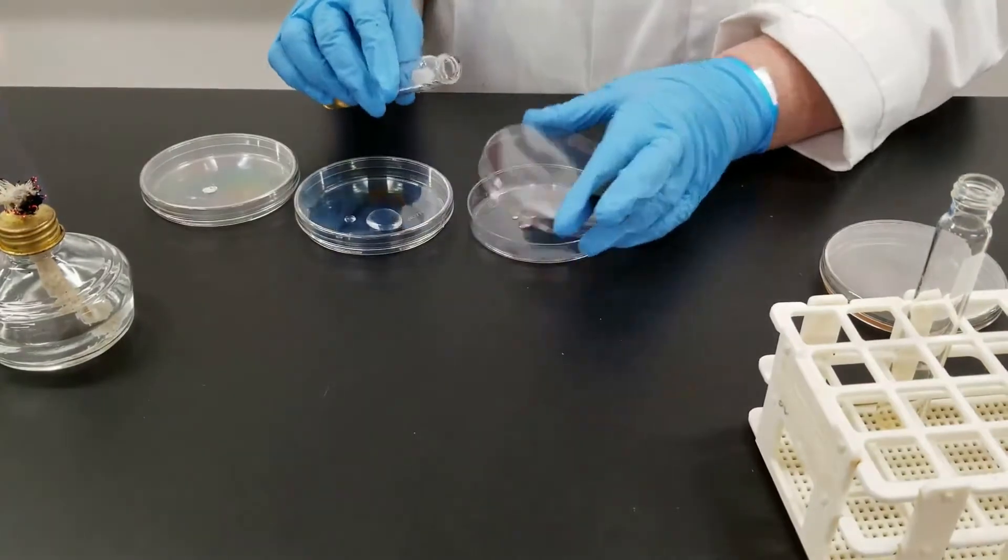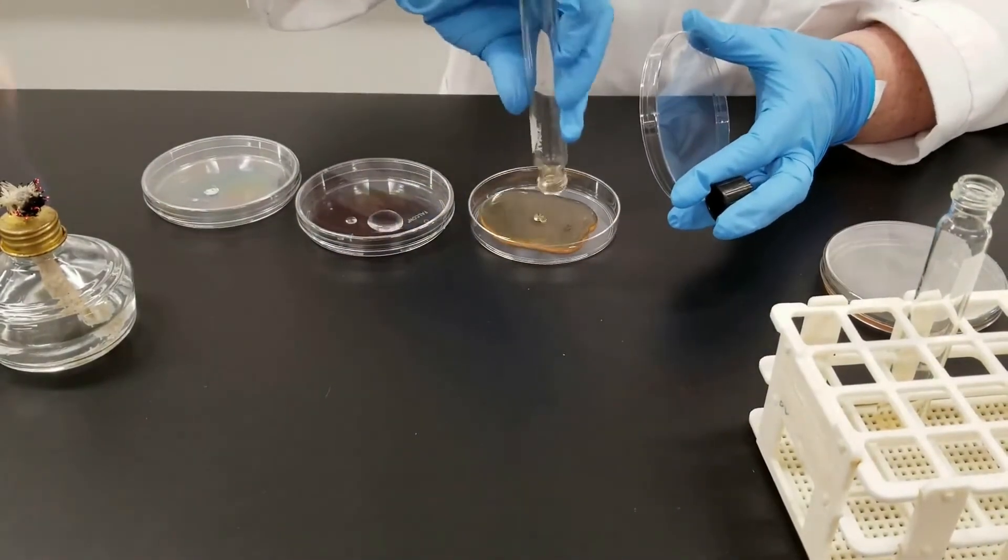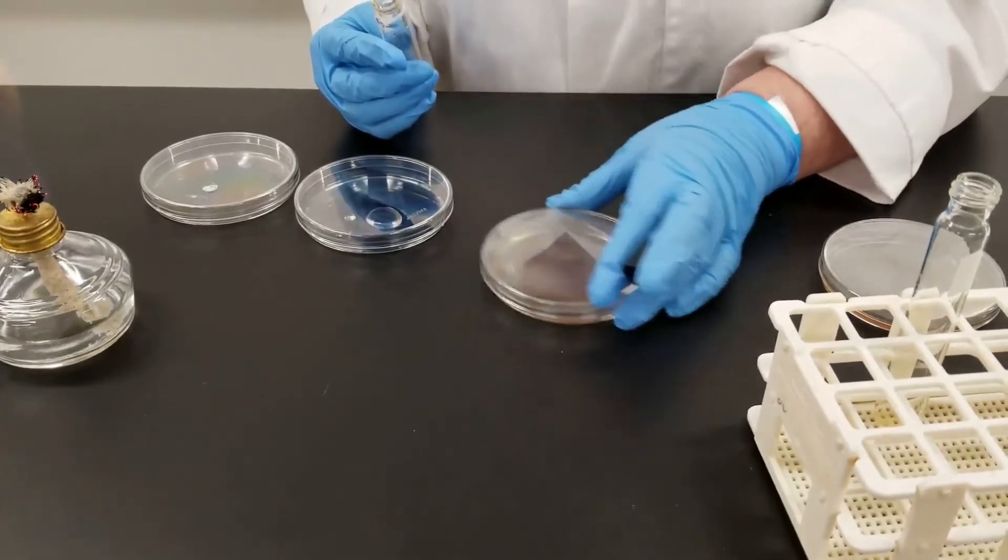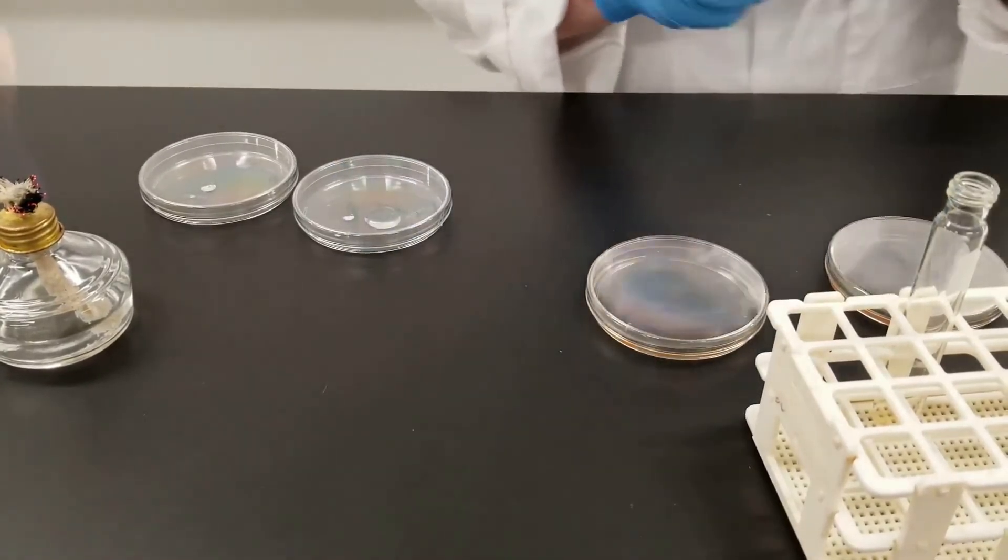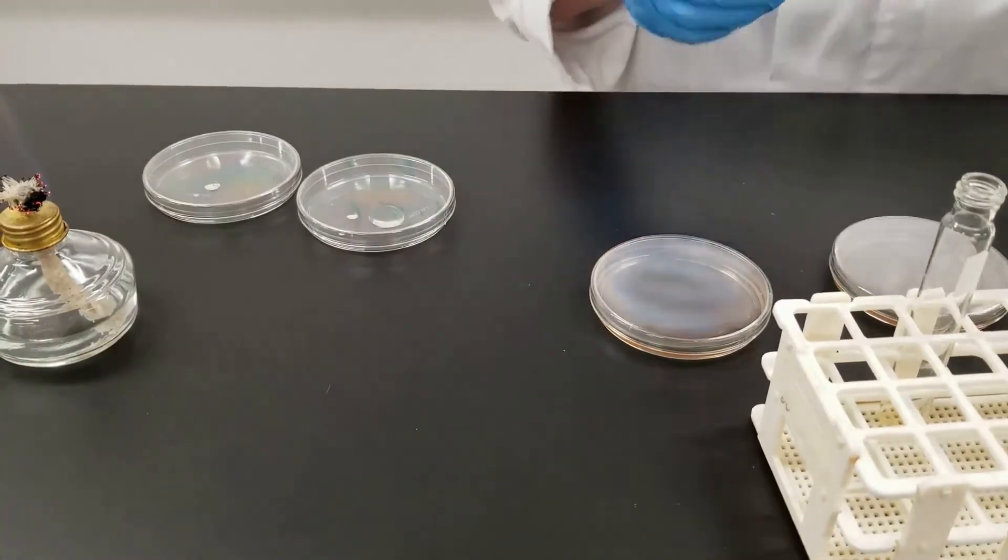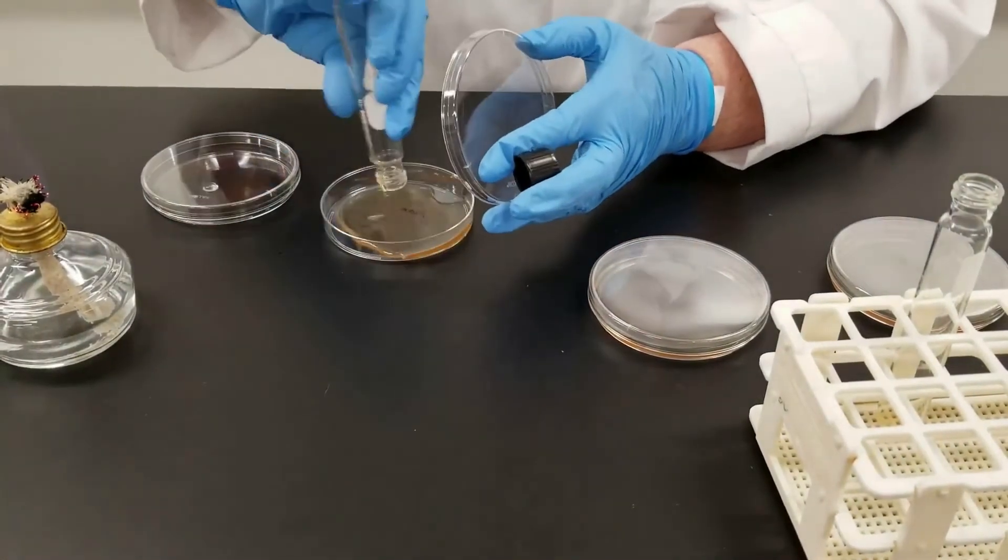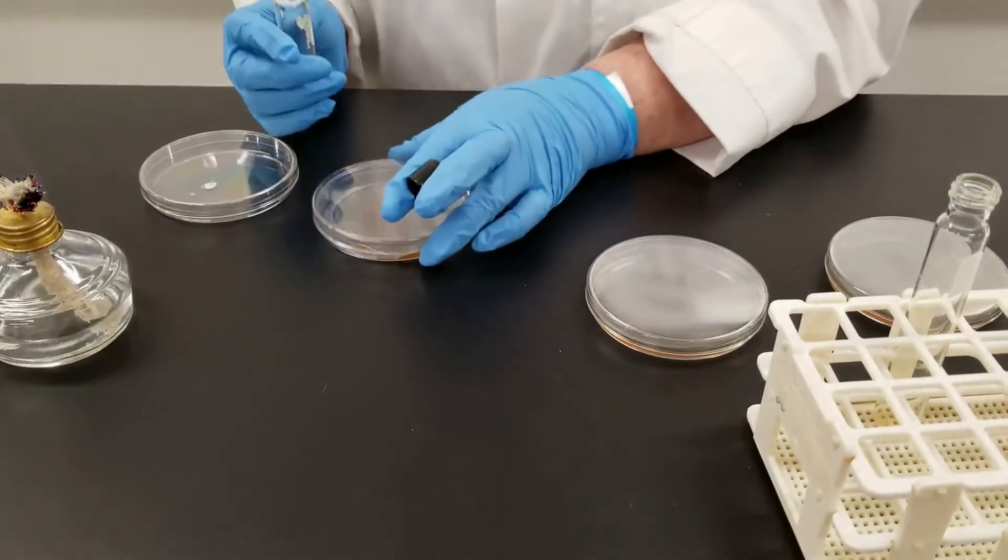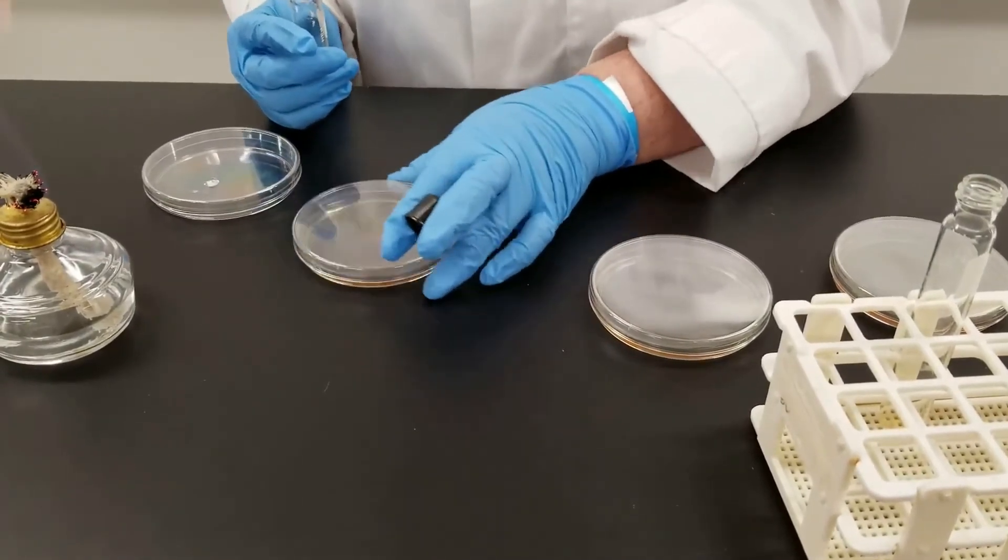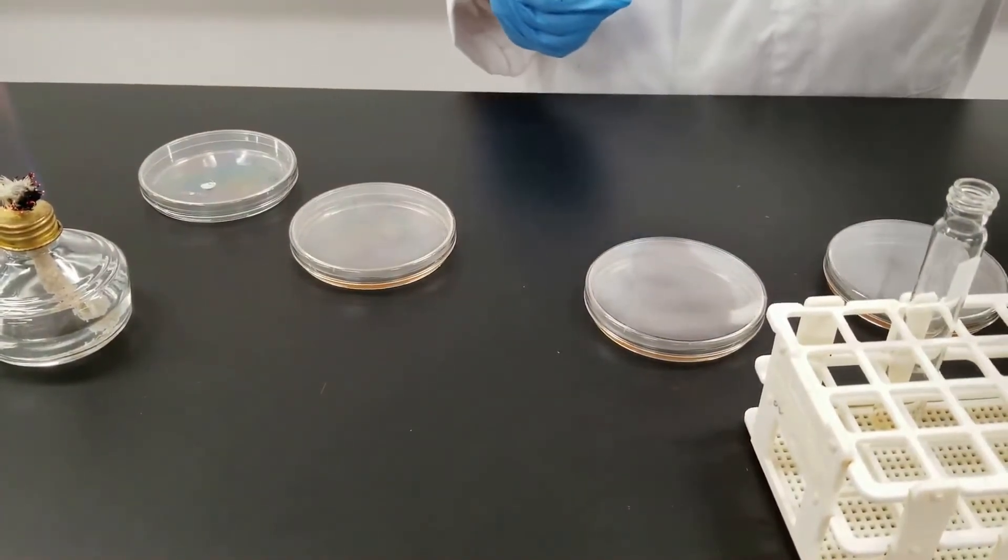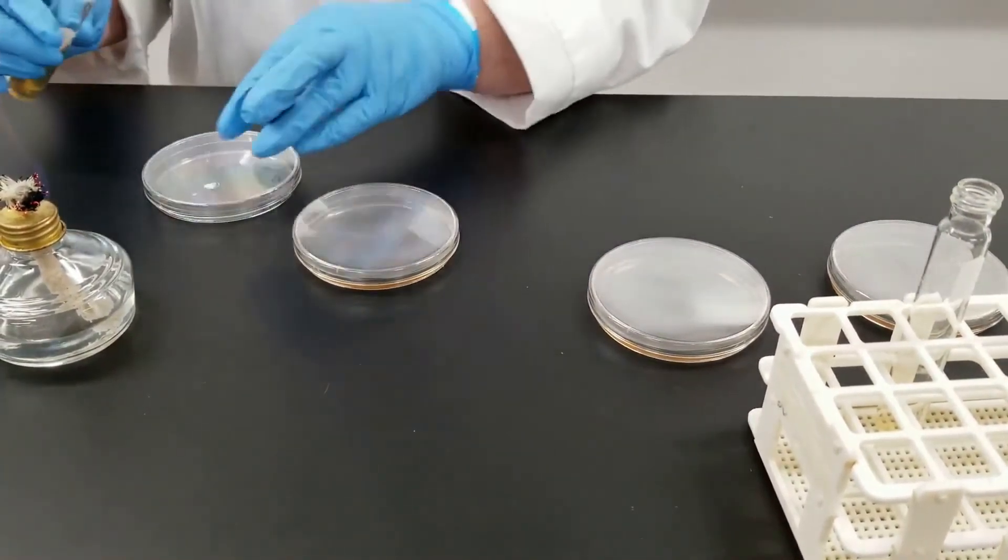And then we're just going to go down the row and do that for each one of these plates. Remember to swirl it so it evenly covers the bottom of the plate. Plus that also helps to mix up the sample well. With pour plates, remember, different than a streak plate, you could have bacteria growing throughout the medium, not just on top, but throughout.